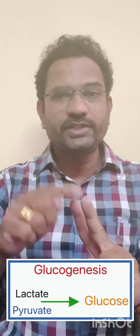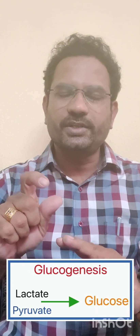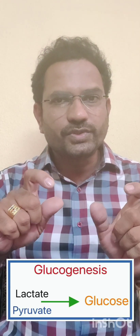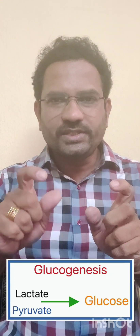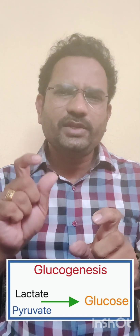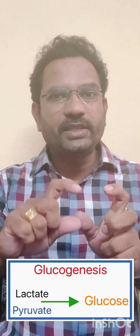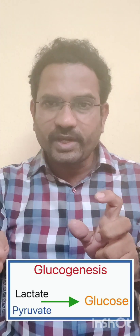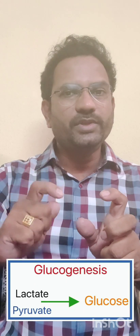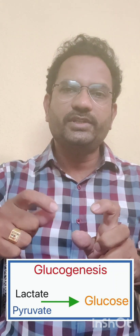The next topic is glucogenesis, also known as gluconeogenesis. 'Genesis' means formation, so this refers to the formation of glucose. 'Neo' means new — gluconeogenesis specifically refers to the formation of glucose from sources other than carbohydrates, like pyruvate and lactate. When glucose is formed from non-carbohydrate sources, it is called gluconeogenesis.